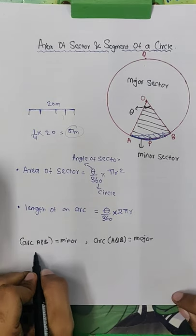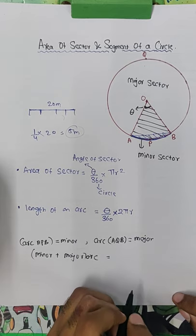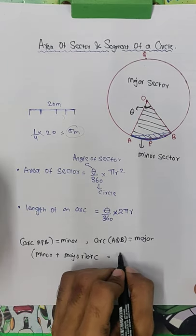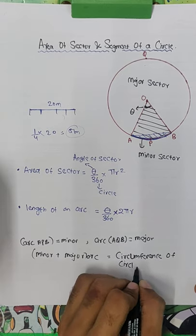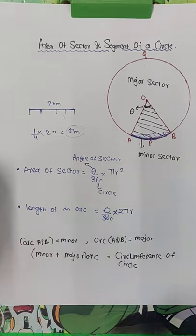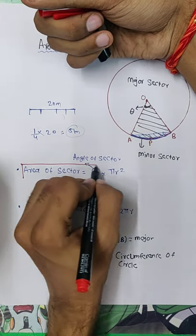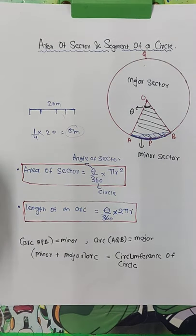Minor arc plus major arc will be nothing but equal to the circumference of your circle. Okay, cleared?